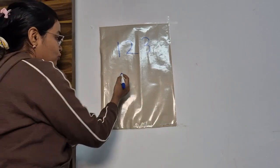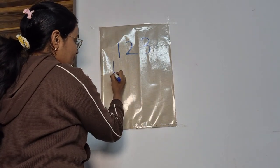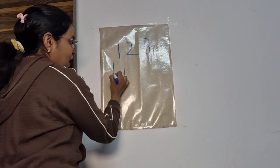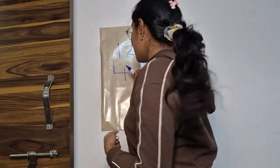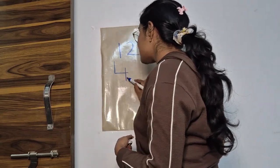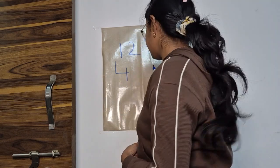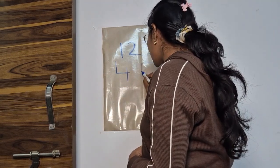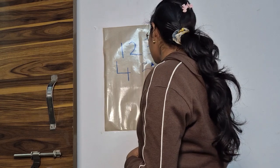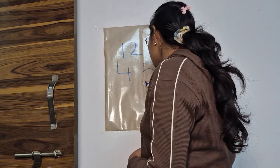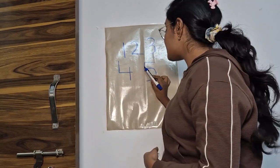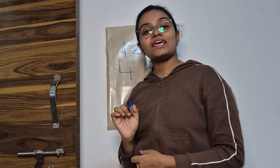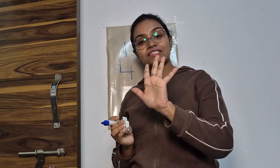Now number four. Standing line, sleeping line, standing line makes our number four. Sleeping line, standing line, half circle makes the number five.